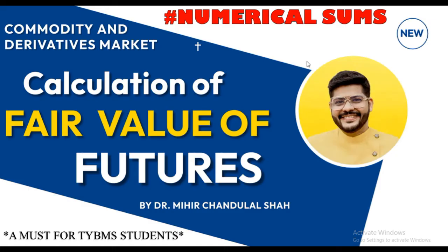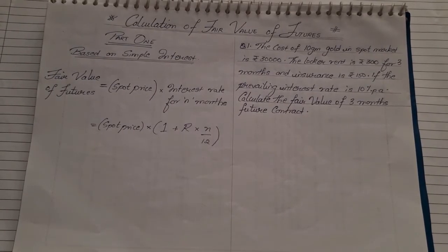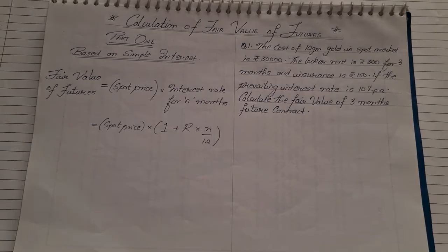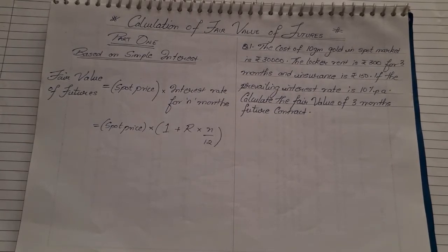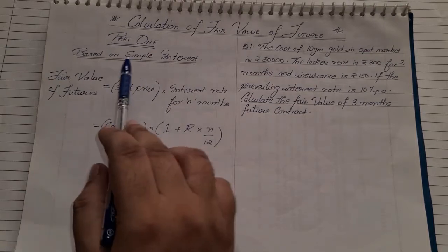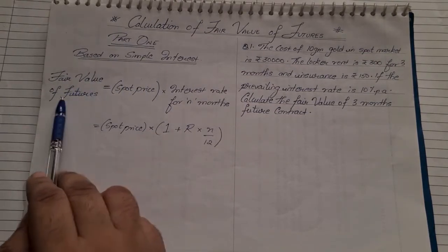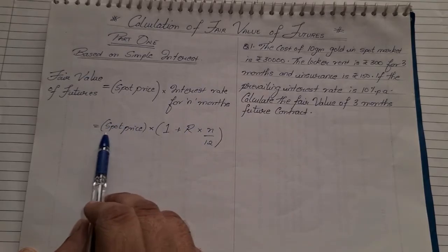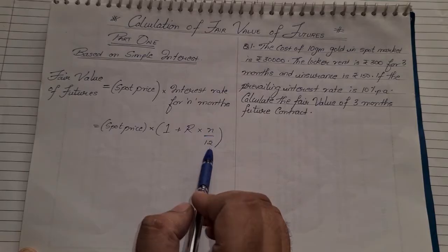There are two methods which we need to cover, and both will be covered in this video. Without any further ado, we will start with the first method. You are expected two questions from this particular topic, so around 15 marks this topic carries. Part one is based on simple interest. The formula is: fair value of future = spot price × (1 + r × n/12), where n is the number of months.